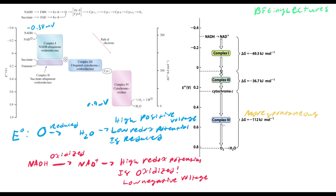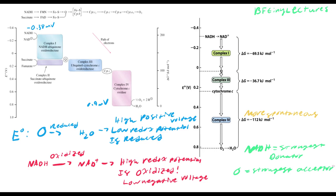NADH is the strongest electron donator, and O is the strongest electron receptor. It makes sense for NADH to be the strongest donator because when it enters the electron transport chain it donates its electrons to form the hydrogen gradient and therefore create ATP. Oxygen is the strongest receptor so that it accepts those electrons from NADH, creates metabolic water, and continues the reaction.